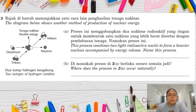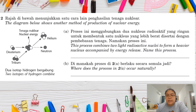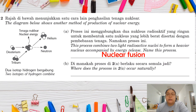Question two shows a diagram of another method for producing nuclear energy. Two isotopes — lighter nuclei — join together to produce a bigger, stable nucleus, releasing helium and neutrons. This process of combining two lighter nuclei to form a heavier nucleus while releasing energy is called nuclear fusion. This process occurs at very high temperatures, such as in the Sun.